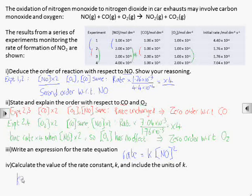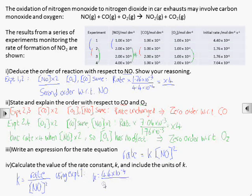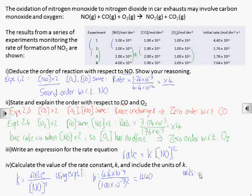Rearranging the rate equation, we can use any of the experiments to provide values for the concentration of NO and for the rate. So we can work out that the rate constant has a value of 440.